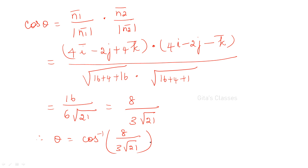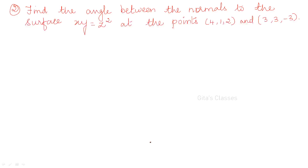This is one type of problem where two different surfaces and one point are given. Now the next type of problem we are going to see: one surface will be given and two different points will be given. We will be asked to find the angle between the normals at these points. Find the angle between the normals to the surface xy = z² at the points (4,1,2) and (3,3,−3). Let us take phi = xy − z².